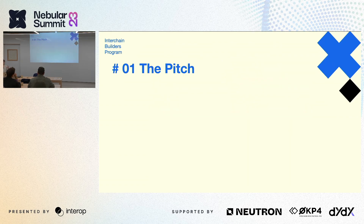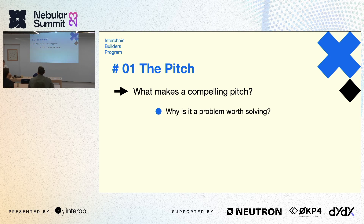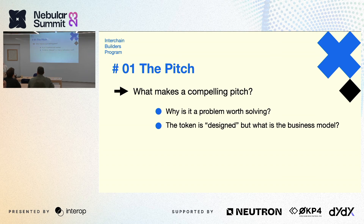The first obstacle is the pitch. You've been developing for a couple of months and you realize you need to raise funds, so you need to put your product into an actual pitch and explain it to people. What makes a compelling pitch? It starts with a problem and a solution, but the most important thing often left out is: why is this actually a problem worth solving? Anybody can identify problems, but are these solutions actually needed? And a second common mistake is that many teams have an idea for a token...